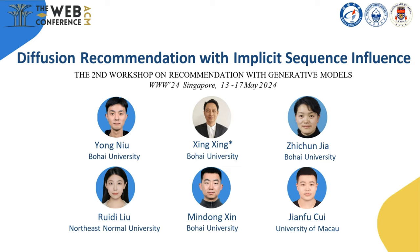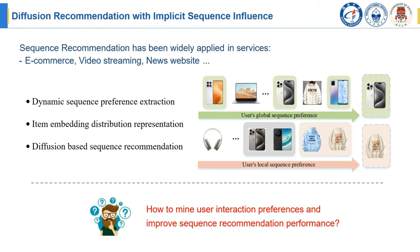Next, I introduce a diffusion sequence recommendation model by our team. Sequence recommendation is widely used in real-world services, but current research has issues with insufficient sequence feature extraction and single-item embedding representation. Due to the fact that user historical interaction sequences contain local and global behaviors, they cannot be generalized in modeling. At the same time, fixed item embedding restricted model recommendation performance.